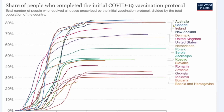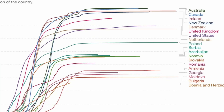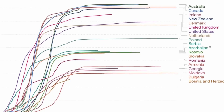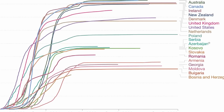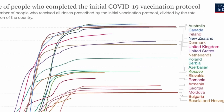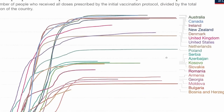So we see countries that are fairly highly vaccinated up here: Australia, Canada, Ireland, New Zealand, Denmark, United Kingdom, United States, Netherlands — what we might call the more affluent countries. And then we've got poorer European countries beneath who vaccinated at much lower rates. For example, Moldova vaccinated at around the 30% rate as opposed to Australia, where it was well over 80%. So a really quite significant difference in vaccination rates.